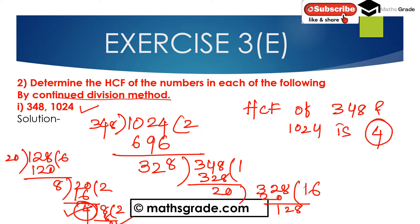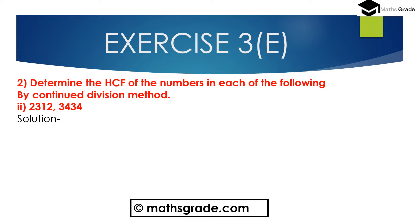So 4 is the highest common factor between 348 and 1024 using the continued division method. Now question number 2, second part: determine the highest common factor of 2312 and 3434 using the continued division method.